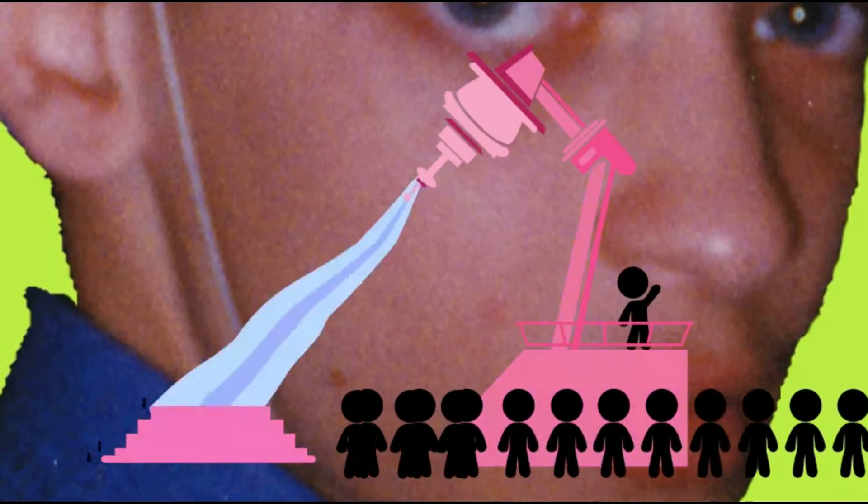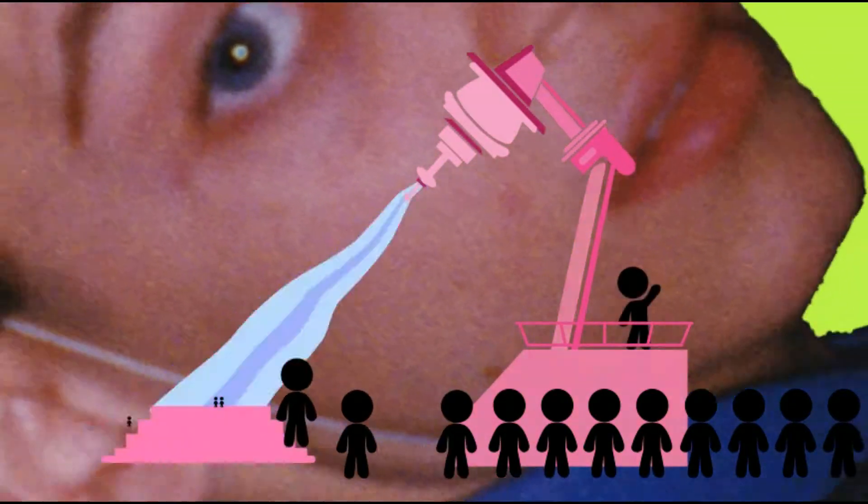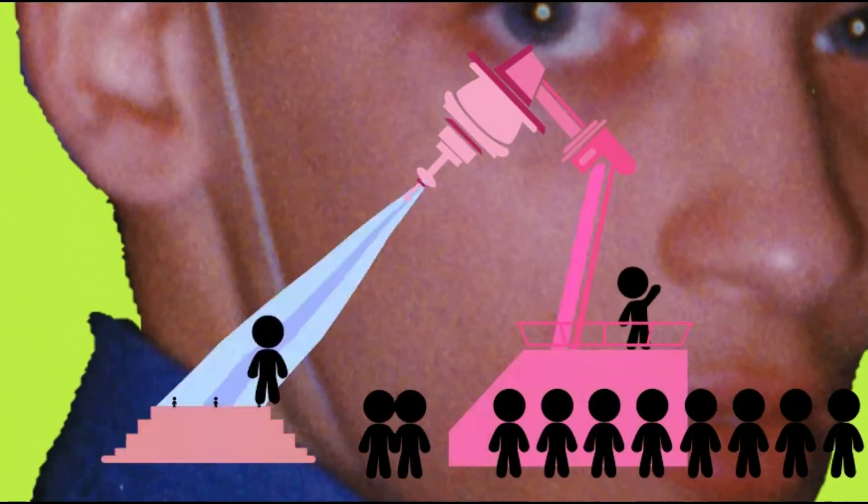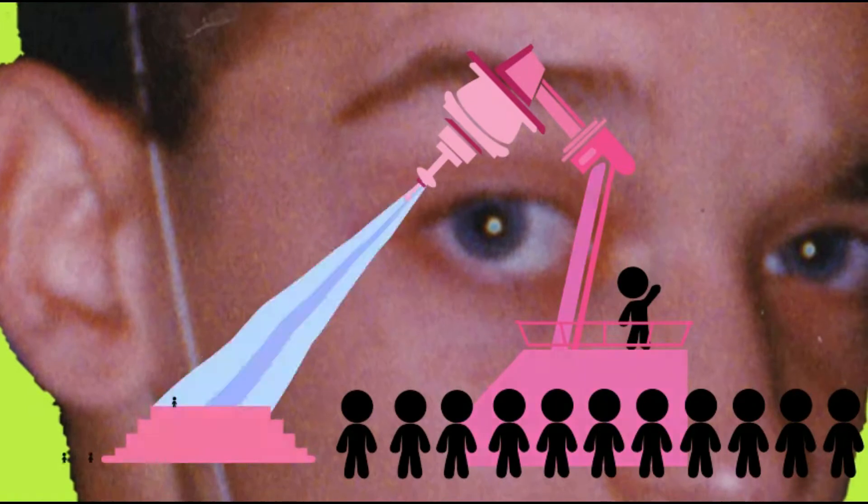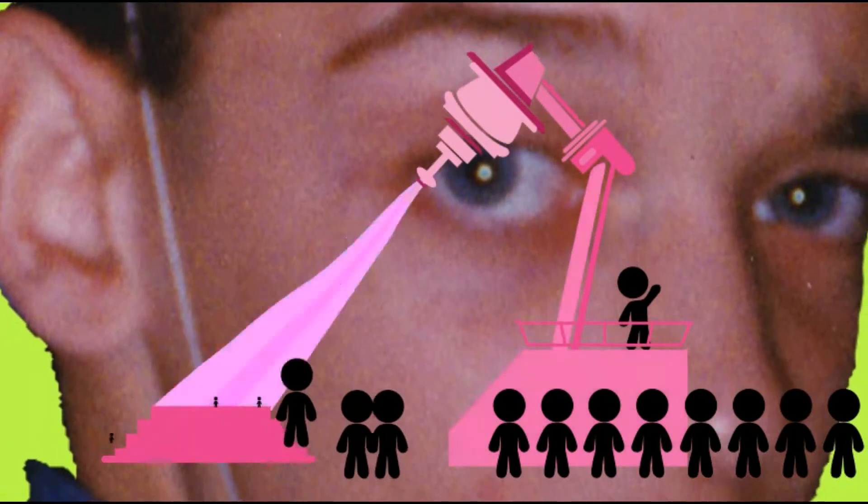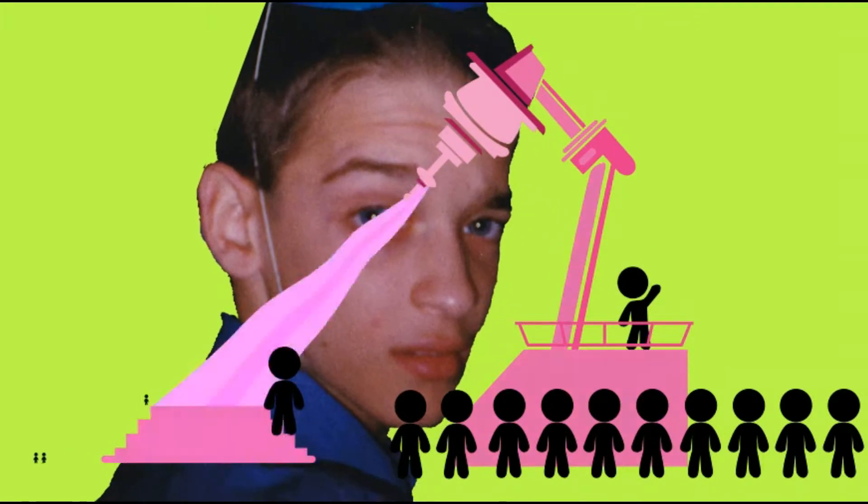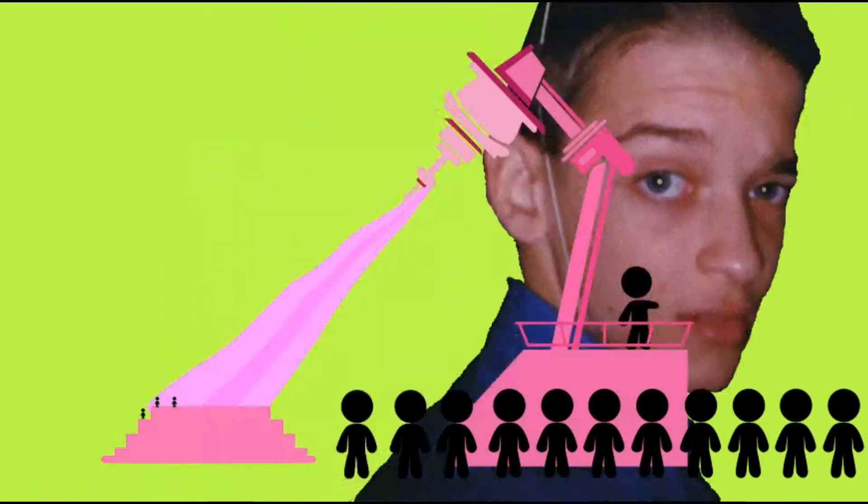Of the tribe of Simeon were sealed twelve thousand, of the tribe of Levi were sealed twelve thousand, of the tribe of Issachar were sealed twelve thousand, of the tribe of Zebulun were sealed twelve thousand, of the tribe of Joseph were sealed twelve thousand, of the tribe of Benjamin were sealed twelve thousand.